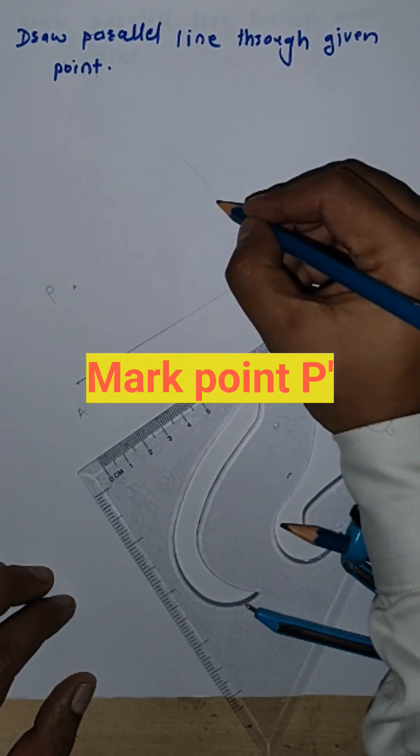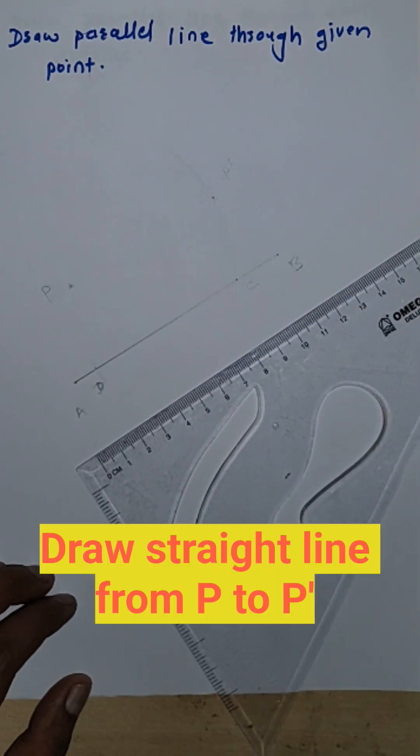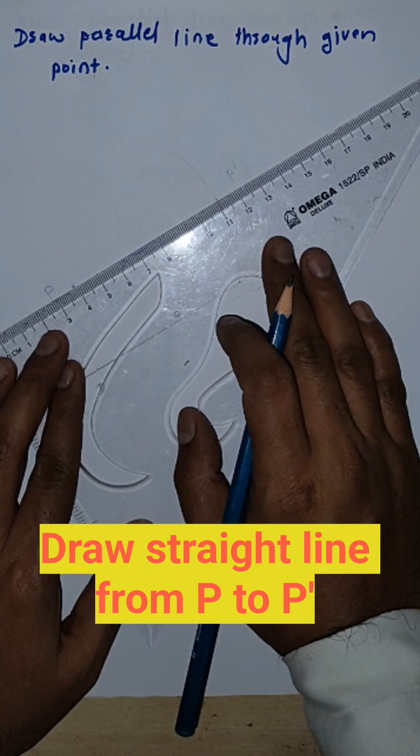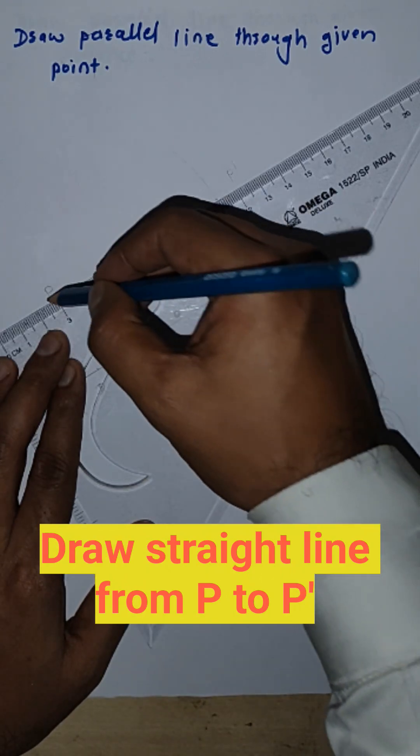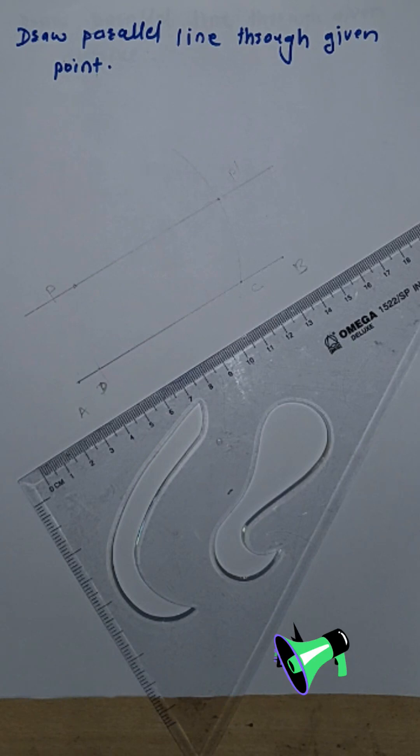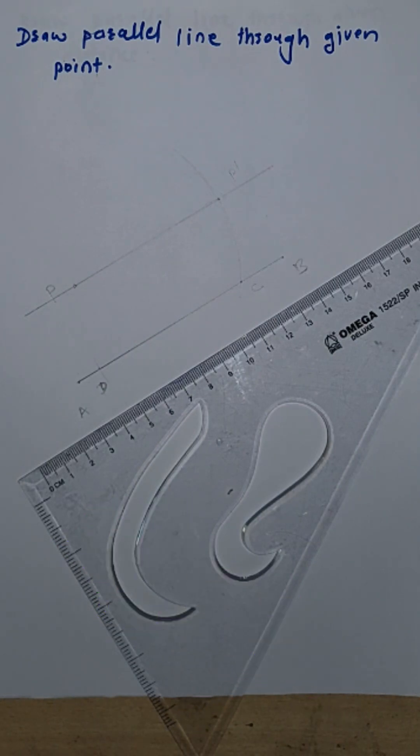This is our required point. Draw a straight line from P to A'. This is the parallel line when the point is given.